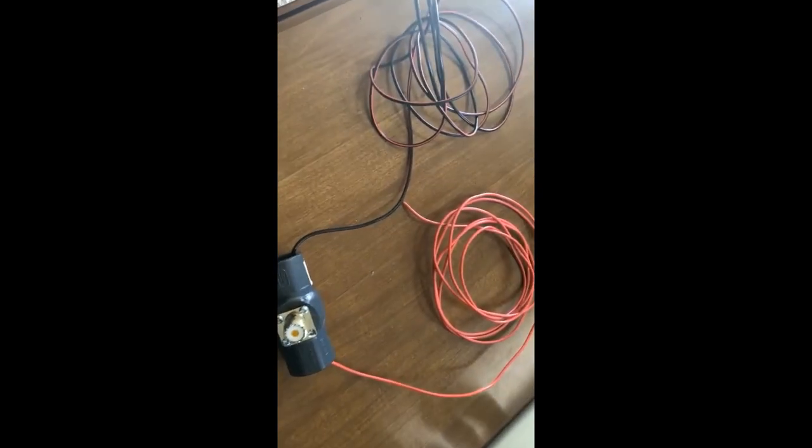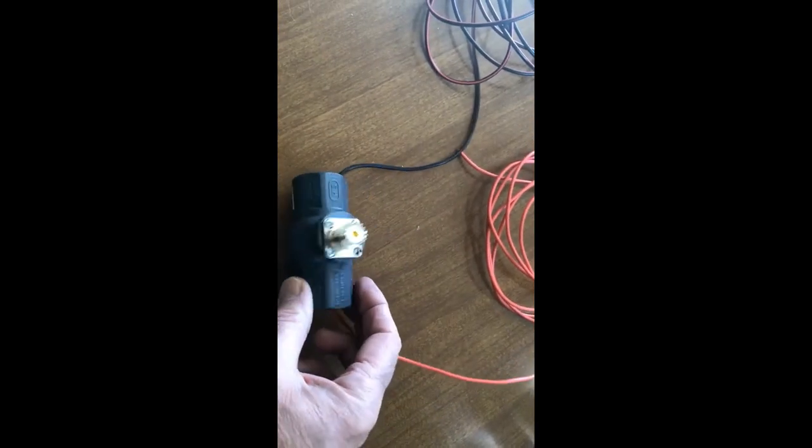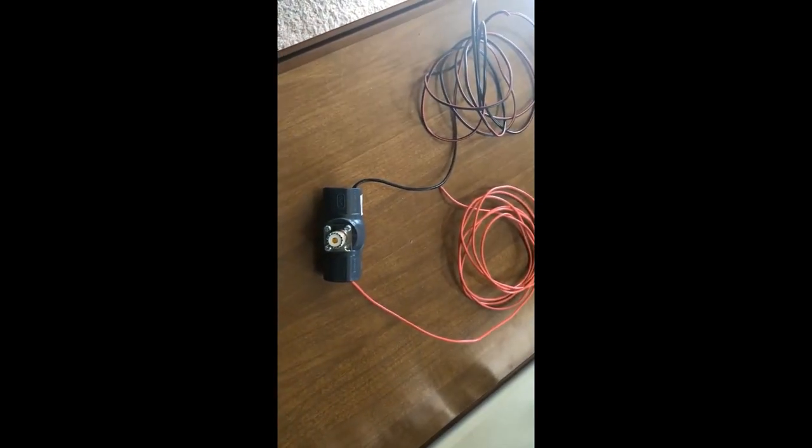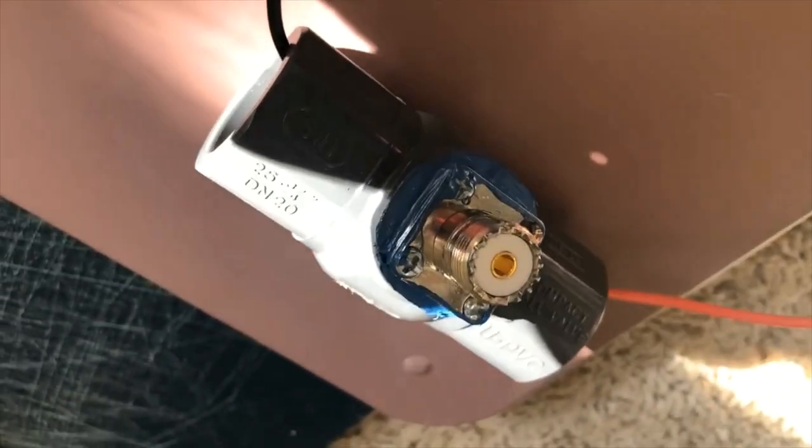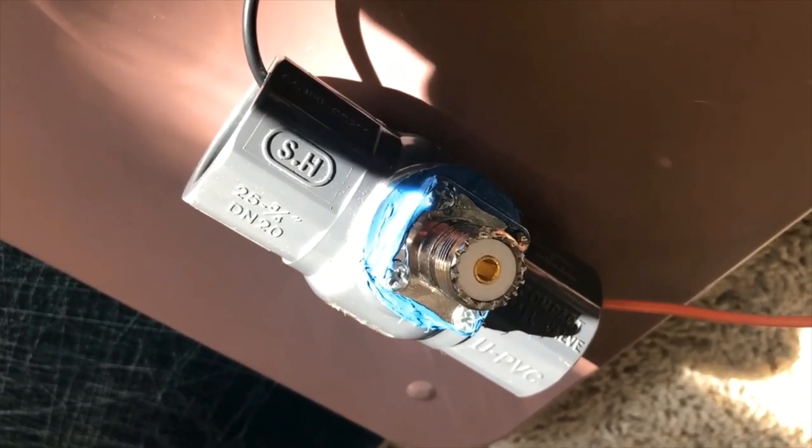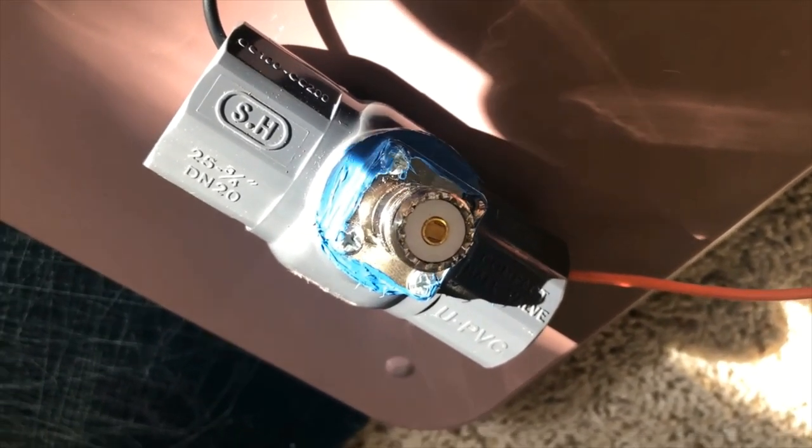So we have it soldered on and we have it mounted to the pipe here. And now all we need to do is feed it through the PVC pipe. I decided to put a little bead of silicone. I had some gasket maker in between the pipe and the mount there, so it would be waterproof.